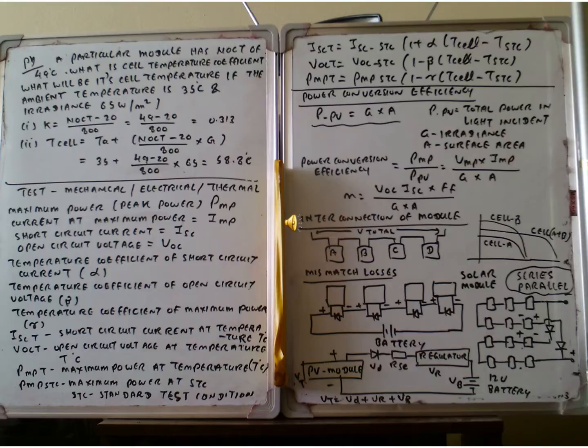And then we can also calculate the cell temperature. Cell temperature TC equal to TA plus (NOCT minus 20) divided by 800 multiplied by G. So TA is the ambient air temperature 35. 35 plus (49 minus 20) divided by 800 multiplied by 850. You got 58.86 degree centigrade.